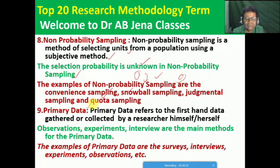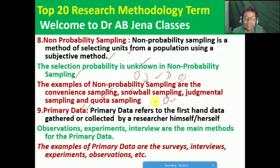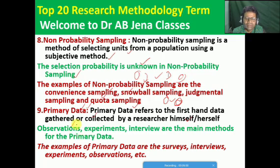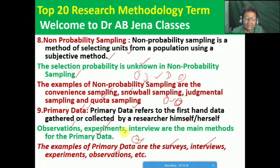Next, the data — data is most important for a research work. Primary data refers to the first-hand data gathered or collected by a researcher himself or herself. The first time data you collect is known as primary data. The main methods for primary data are observations, experiments, and interviews. Examples of primary data are surveys, interviews, experiments and observations conducted by the researcher. Normally primary data will be collected in the case of higher empirical study or research.